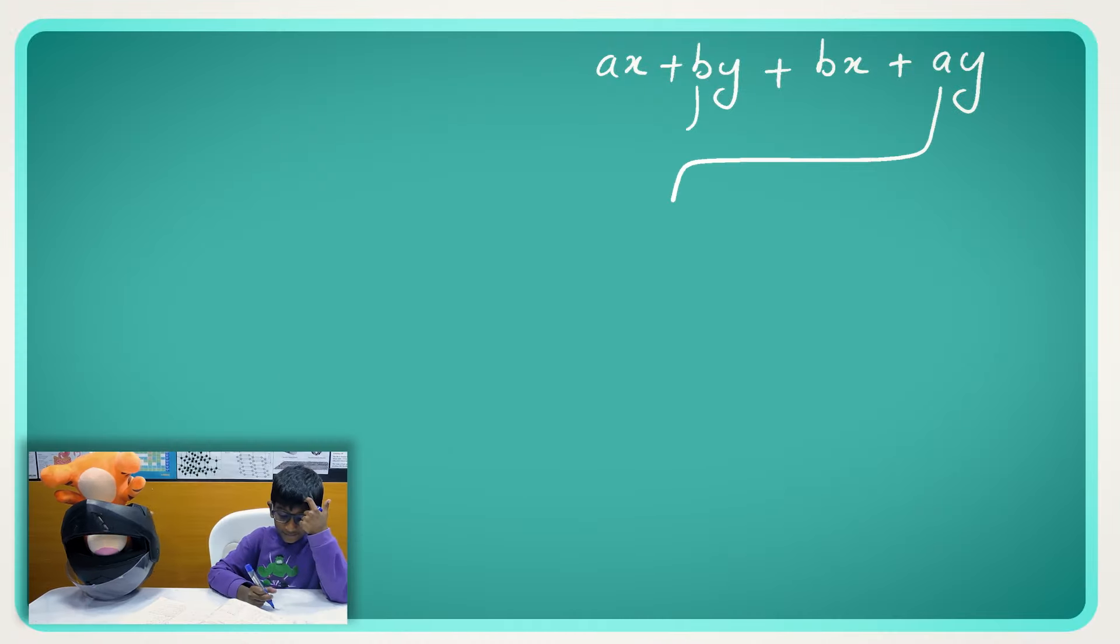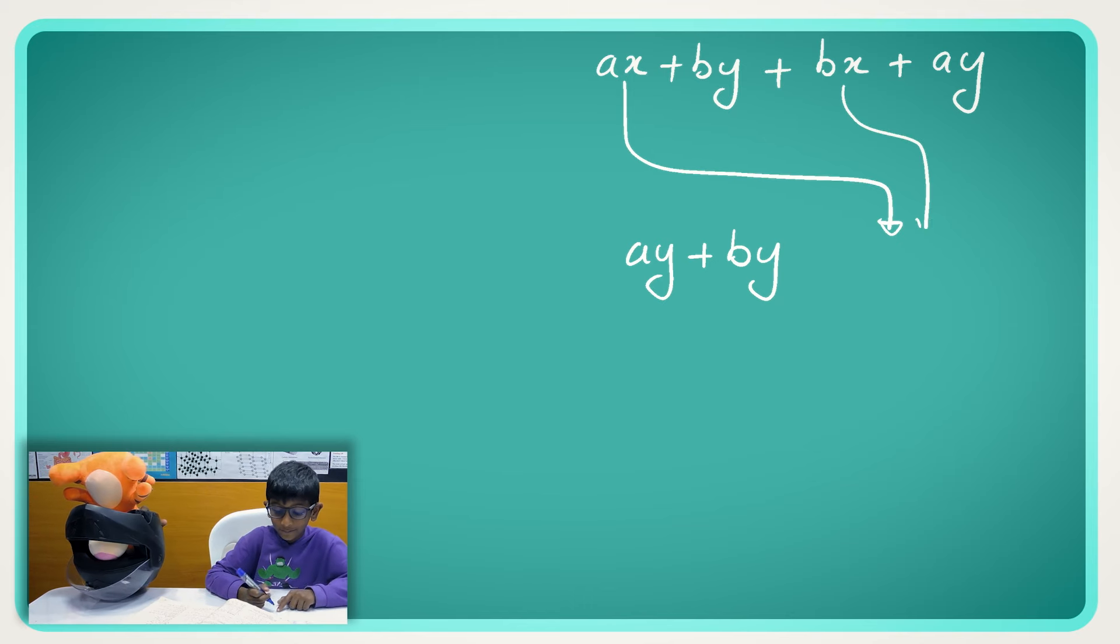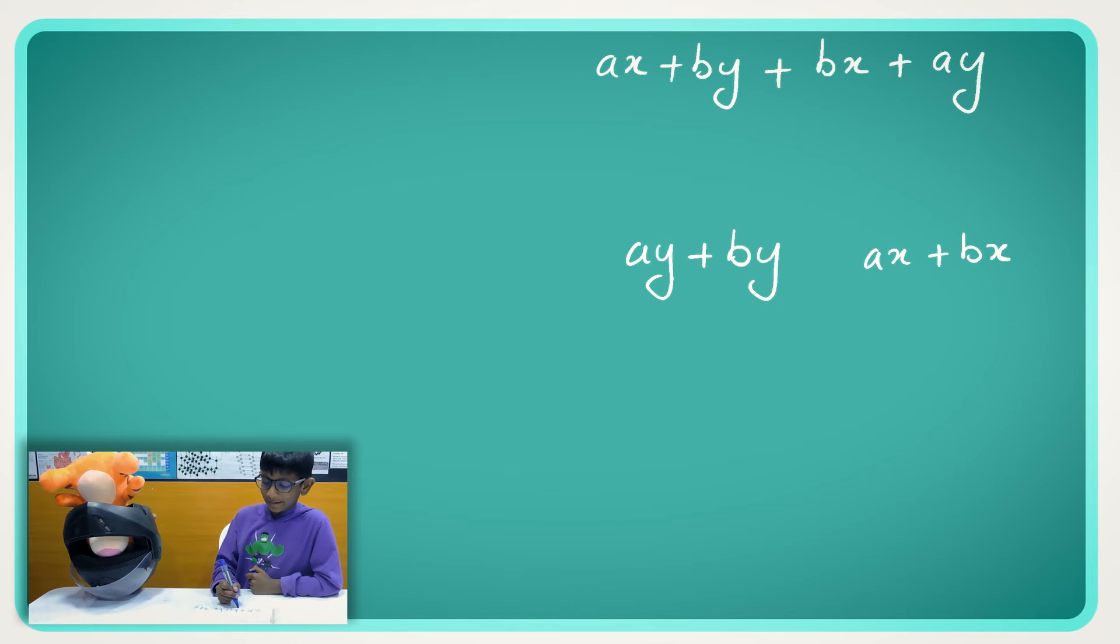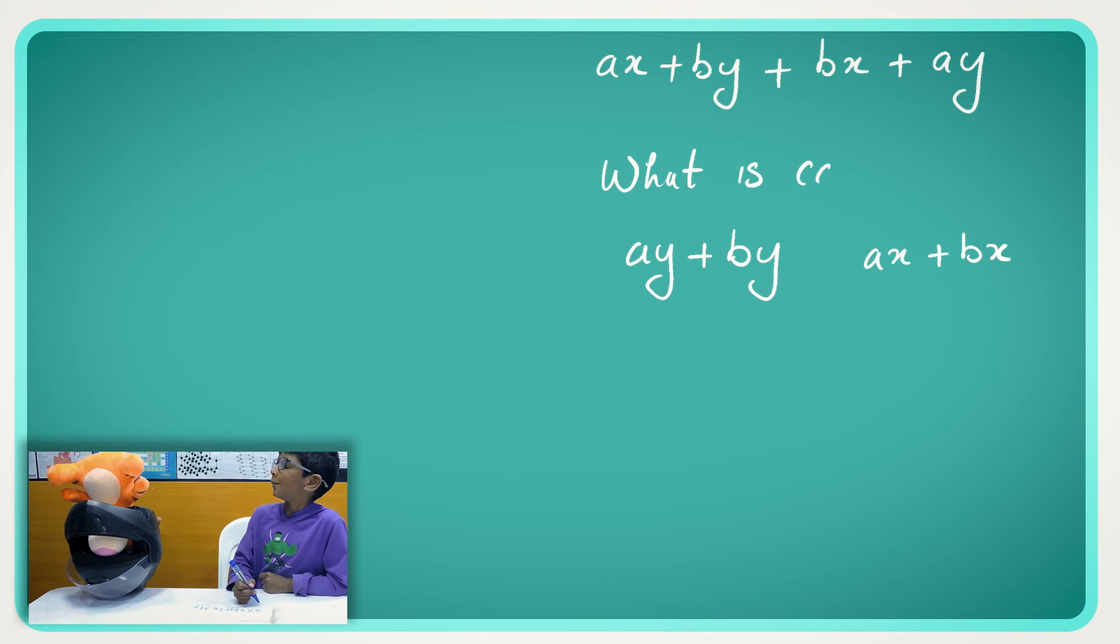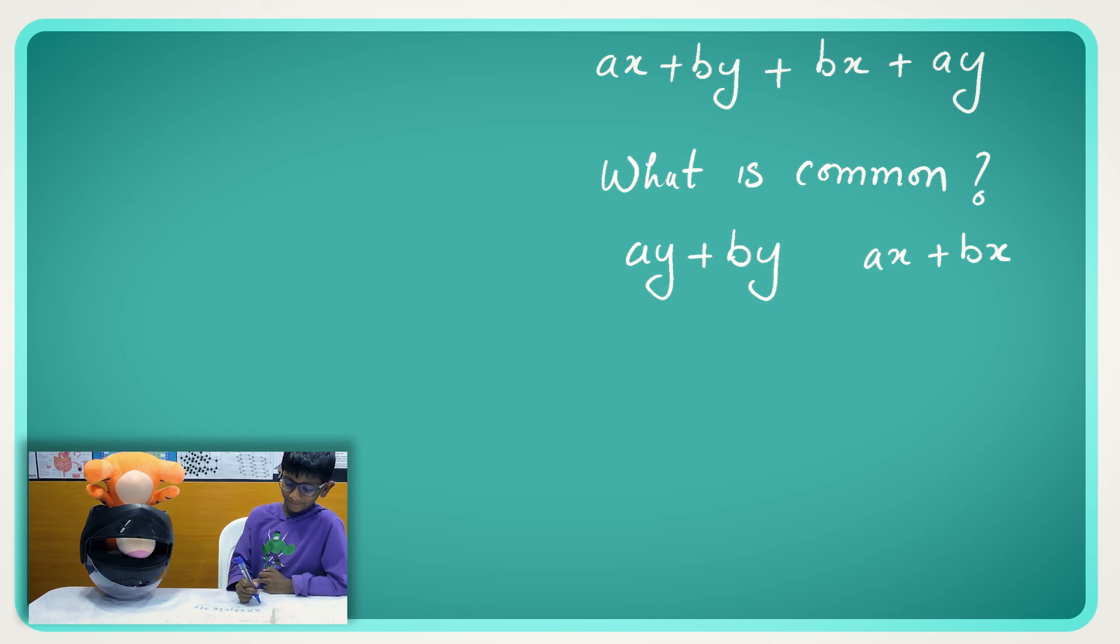We are going to actually do factorizing by grouping. AY and BY as one group. So what is common in that group? Y. And then what are the X's?